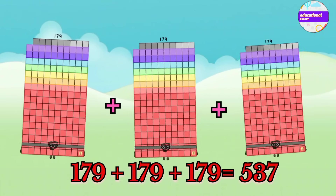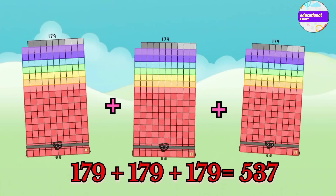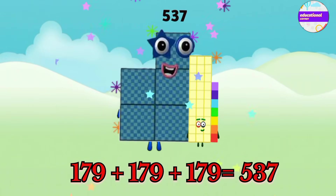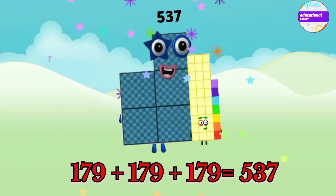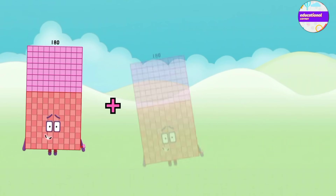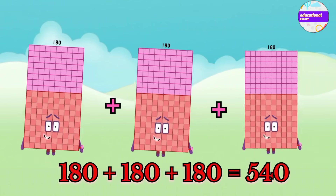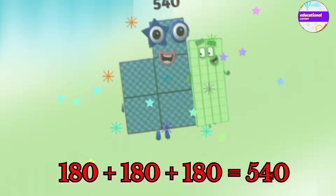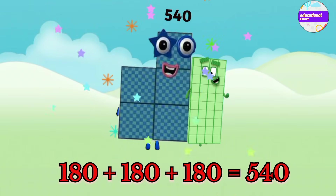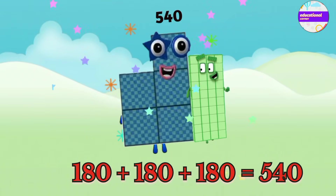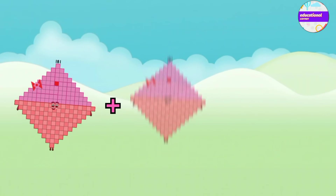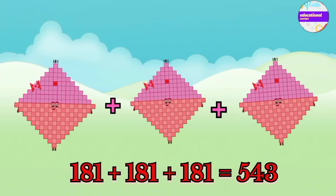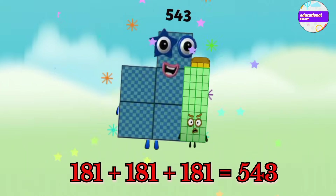179 plus 179 plus 179 equals 537. 180 plus 180 plus 180 equals 540. 181 plus 181 plus 181 equals 543.